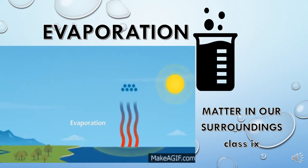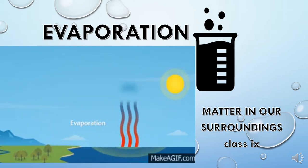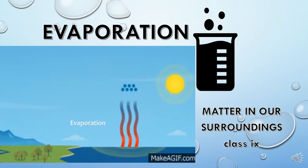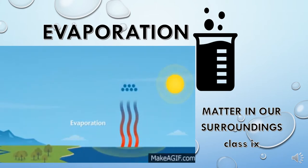Hello students. As we have discussed in previous lectures, one state of matter can be converted into another state by heating, cooling, or applying pressure. But you must have observed some natural phenomena in which water from various water bodies evaporates and gets converted into water vapor by the heat of the sun. These natural phenomena occur spontaneously — let us discuss how.